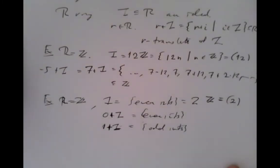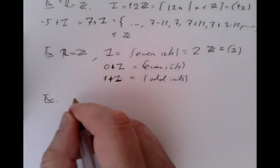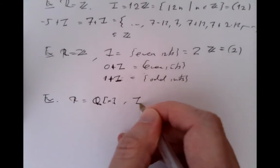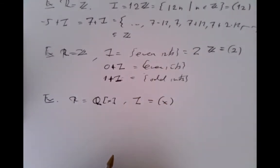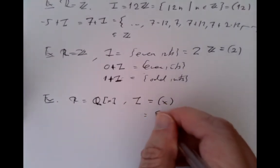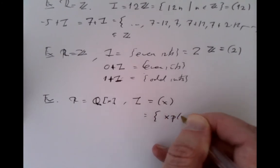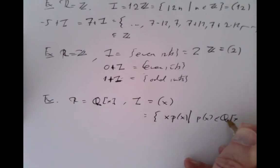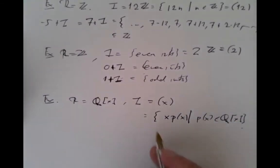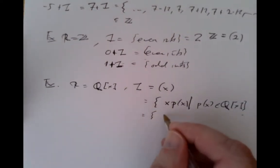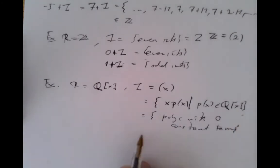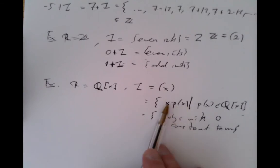We could also look at a polynomial example. Take our ring to be rational-coefficient polynomials in one variable, and let the ideal I be the ideal generated by the polynomial x. That's all the multiples of x — all polynomials that are x times some polynomial. Another way to describe this ideal is that it's the set of polynomials with zero constant term, because having x divide into the polynomial means every term has a power of x in it.